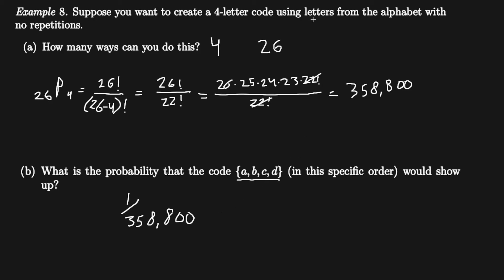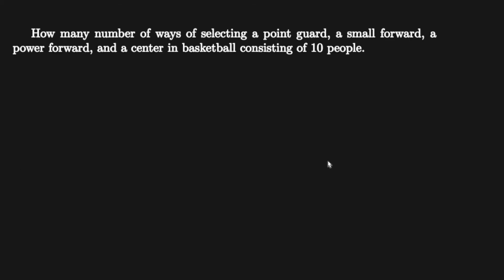The next question asks: how many ways can you select a point guard, small forward, power forward, and center from a group of 10 people in basketball? Since each position is distinct, this is a permutation problem. We have four specific roles from 10 people.